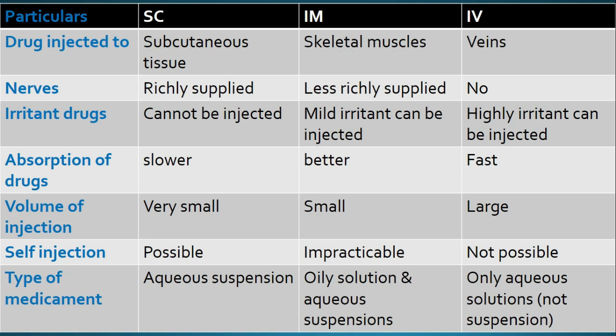Here in this chart, on the left side, you can see the different particulars. The first one is 'drug injected to.' In case of SC, that is subcutaneous tissue. In case of IM, that is intramuscular route, the drug is injected into skeletal muscle. In case of IV, the drug is directly injected into veins.